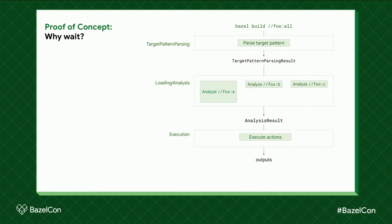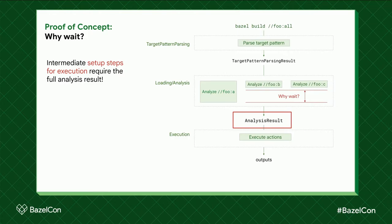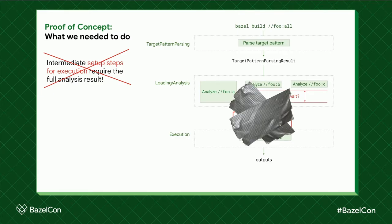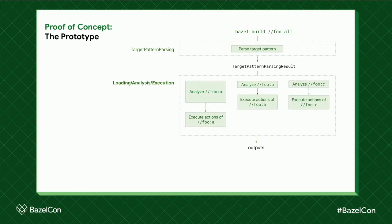This diagram of Bazel's phases will come up again and again. Why do we wait in the first place? The answer is we need the analysis results because execution doesn't come for free — you have to do a bunch of setup steps, and that requires the full analysis results. For this proof of concept we get rid of those steps or move them somewhere else, and then we can go ahead and merge the phases. In the end we have a prototype with a single loading-analysis-and-execution phase where targets a, b, and c move independently of each other.